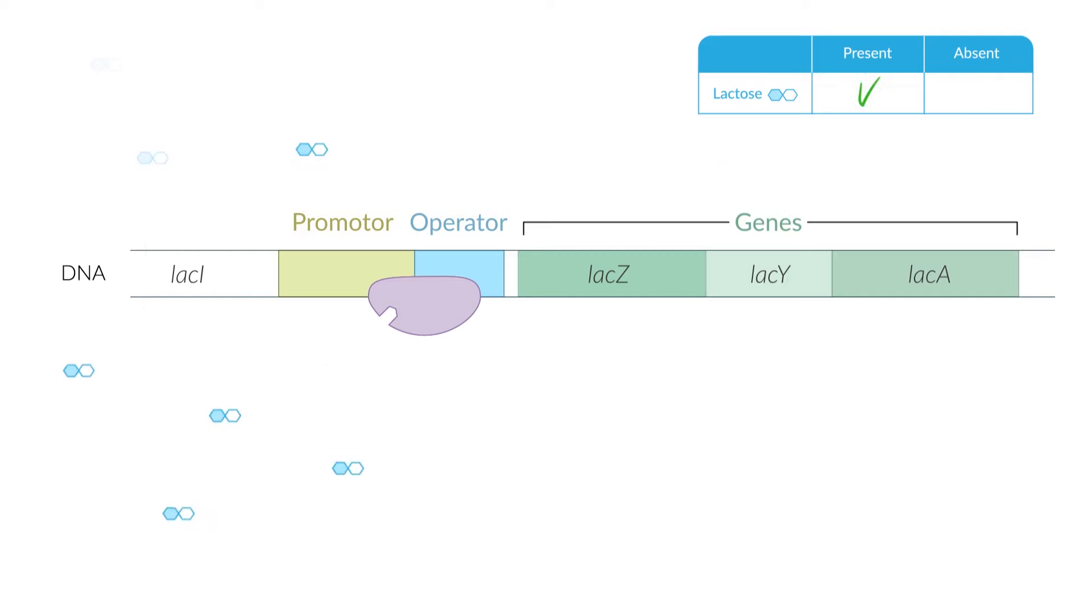As soon as lactose is present in the environment, it's taken up by the bacterium. Lactose then binds in the form of allolactase to the permanently expressed repressor protein. This binding inactivates the repressor, unblocking the operator. Now the RNA polymerase can bind to the promoter and read the subsequent genes. This process is termed substrate induction since it can only occur after the substrate enters the cell.